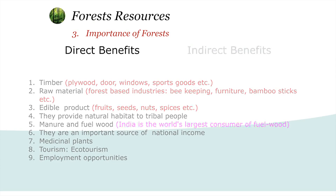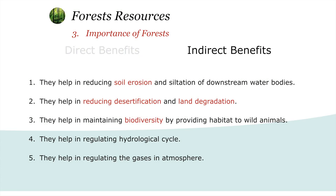As for indirect benefits: forests help in reducing soil erosion and siltation of downstream water bodies. They help in reducing desertification and land degradation. They help in maintaining biodiversity by providing habitat to wildlife and animals. They help in regulating the hydrological cycle — that means the water cycle. They also help in regulating the gases in the atmosphere because they absorb carbon dioxide and emit oxygen.